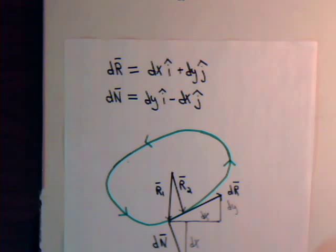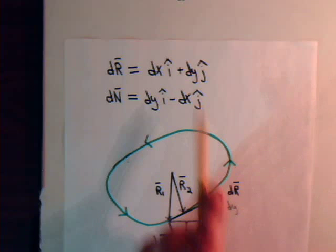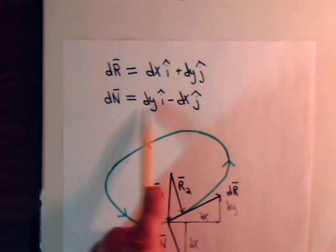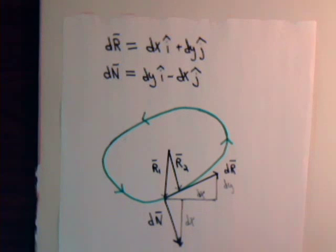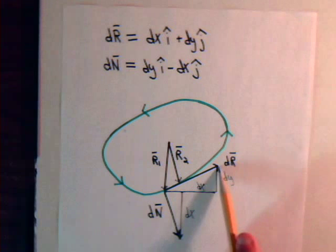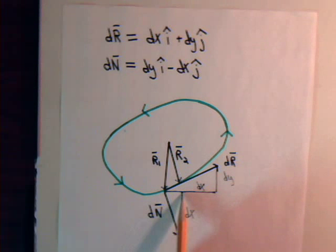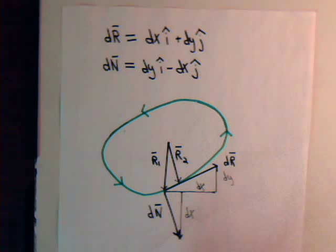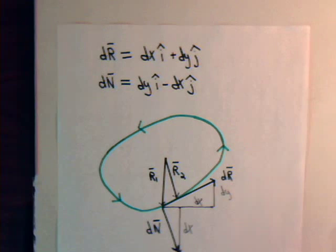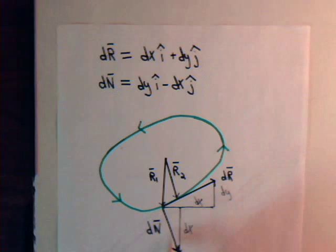Now let's construct a different vector in such a way that the j-component of dr becomes the i-th component of our new vector, and the j-th component of our new vector is minus dx. So dy goes in the i-direction, and minus dx goes in the j-direction. Taking the dot product of this new vector with dr gives zero, so we call this vector dn because it is normal to dr.